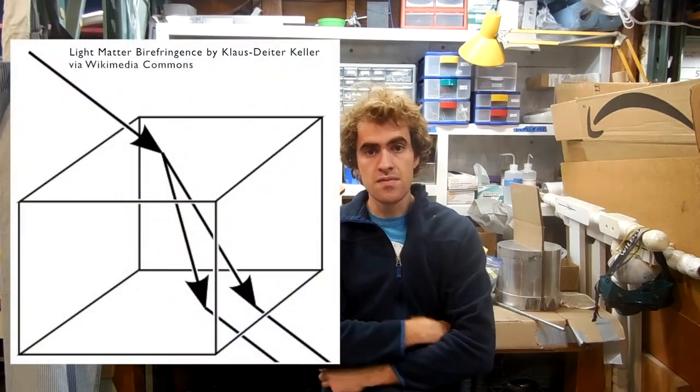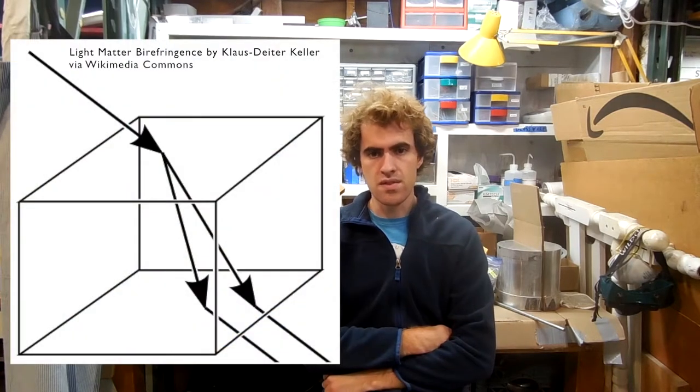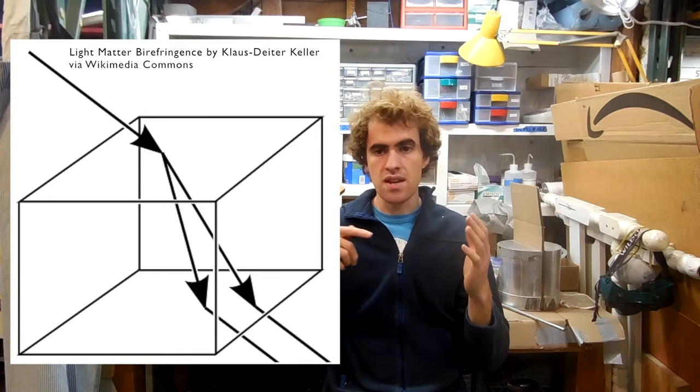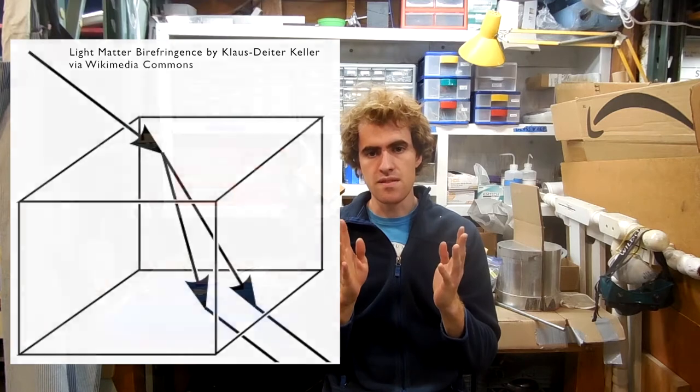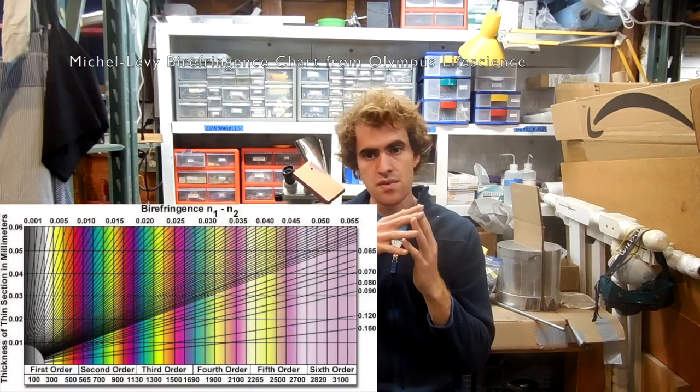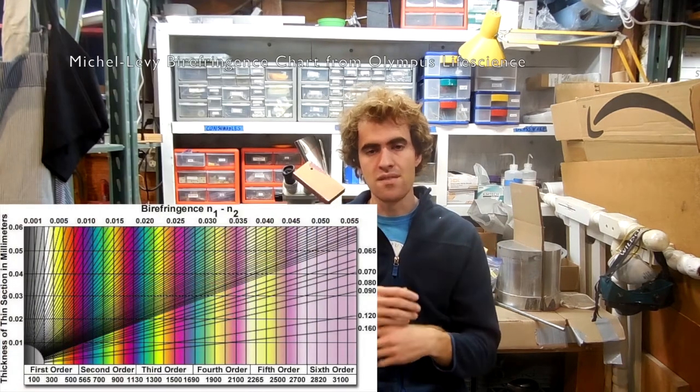The answer comes from a material property called birefringence. Light travels through a single crystal at different speeds depending on the orientation of the crystal lattice. When we shine light through these crystals, the waves split into individual components at different speeds. These components interfere with each other, creating brilliant colors and rotating the light, which can then pass through the second filter.